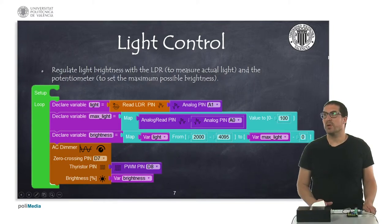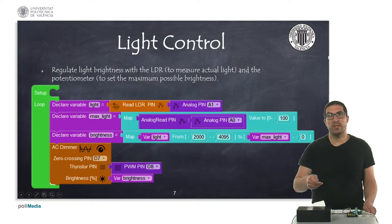In this last example, we're going to see how to control the light with the LDR. We measure the actual light of the environment and we can regulate the maximum brightness with the potentiometer.